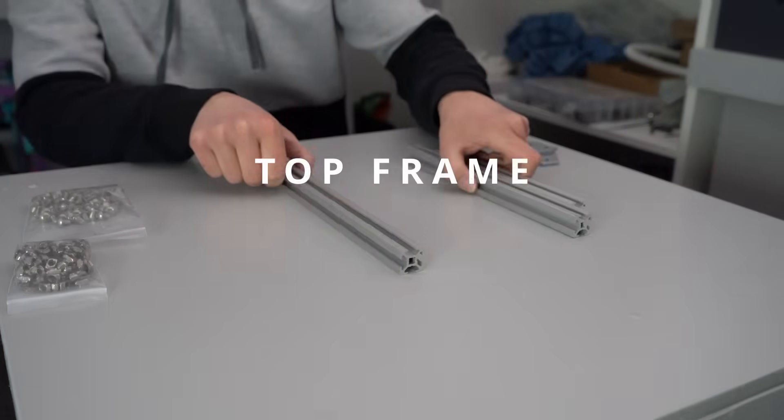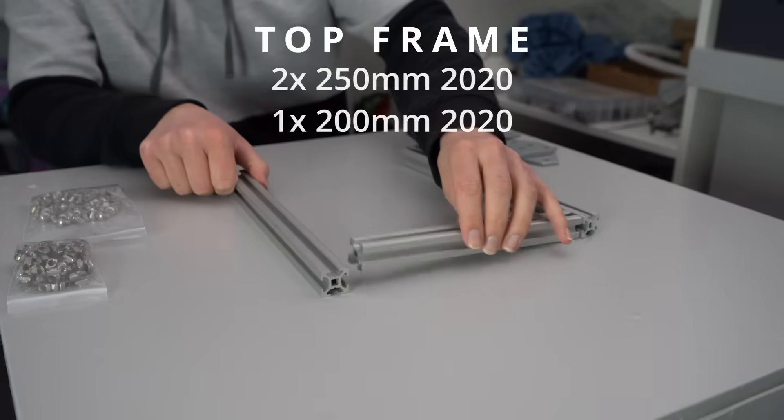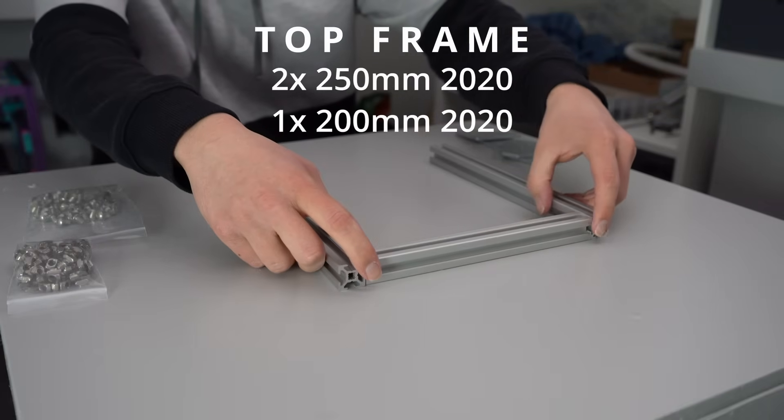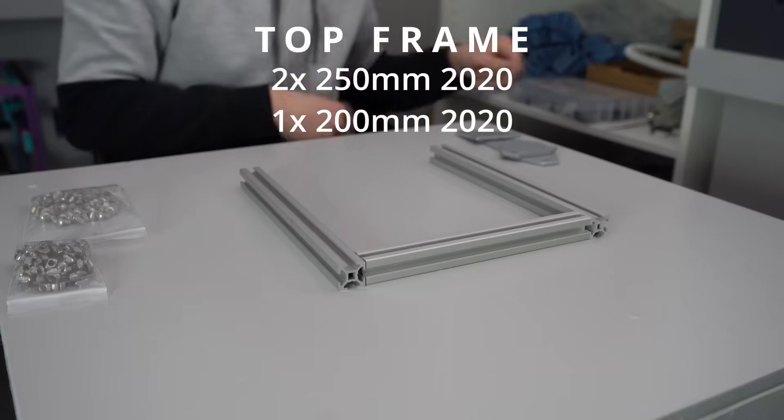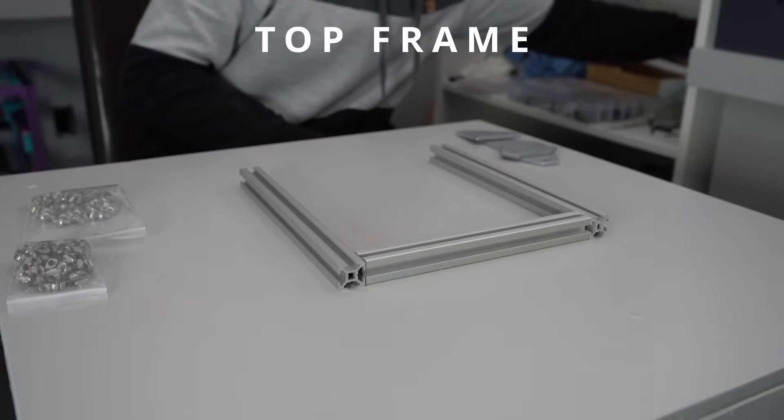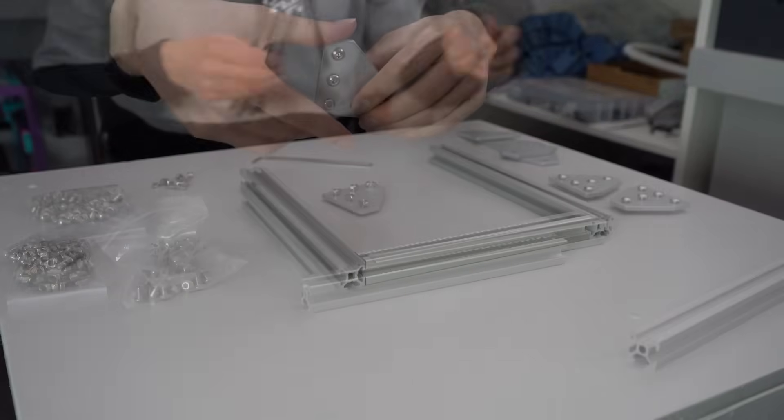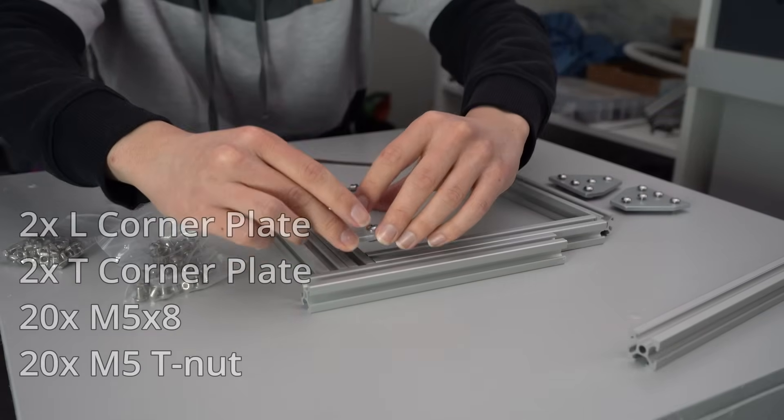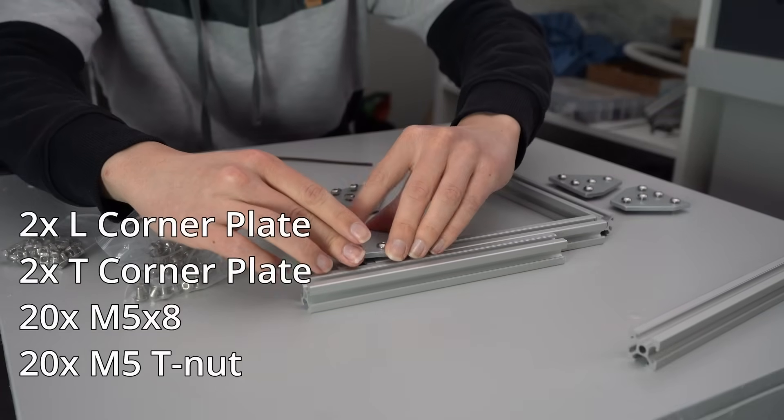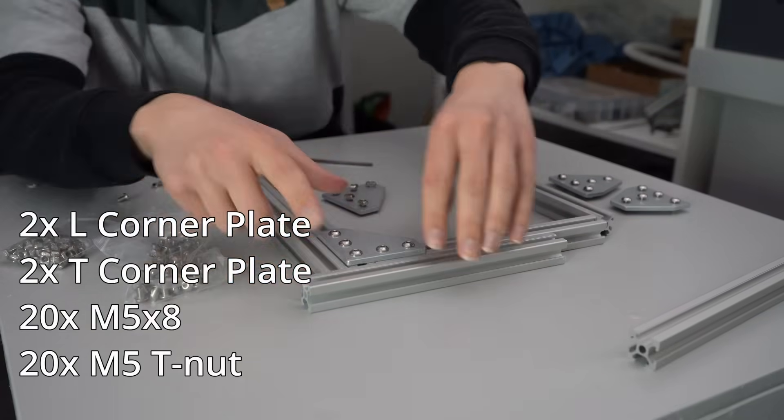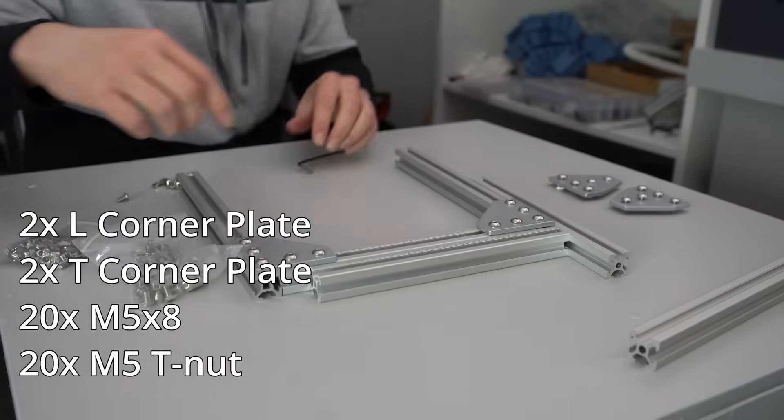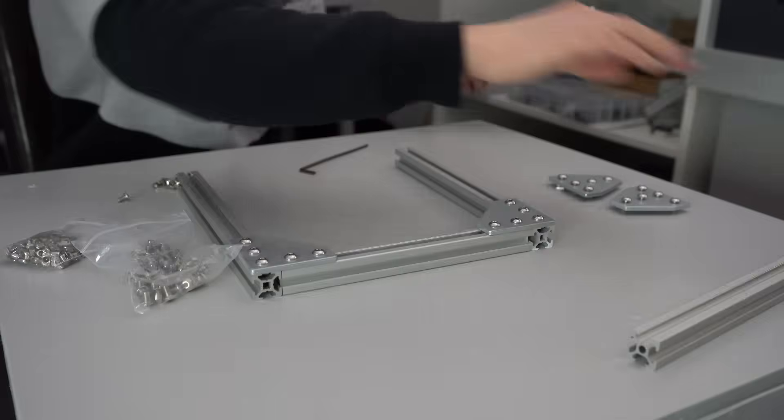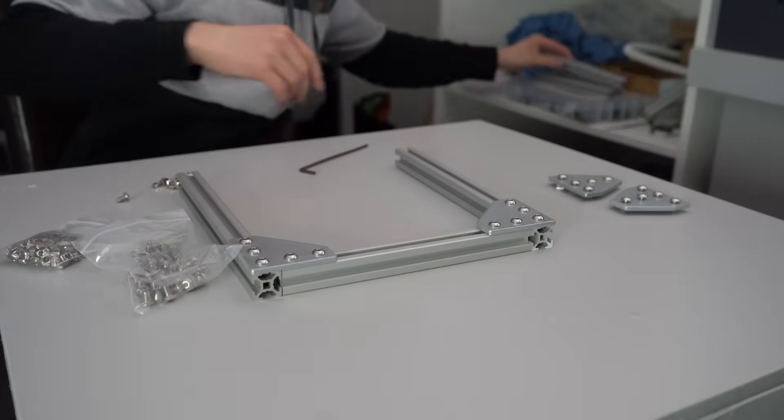The top frame goes together similarly with two 250mm extrusions and just one 200mm extrusion. The final 200mm extrusion will be used for our X-axis, but that step isn't for a while. Here we use two of the L-shaped corner plates to hold the frame together. These will be on the front of the finished machine. The T-plates are used to attach the upper frame to the base, but we won't do that until the Y-axis is assembled.